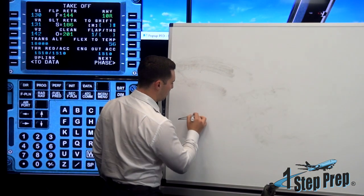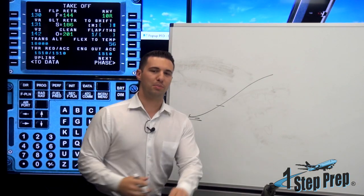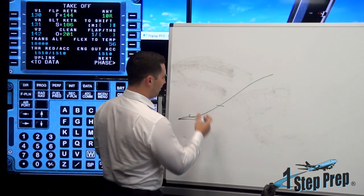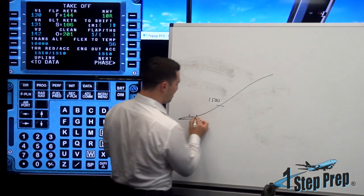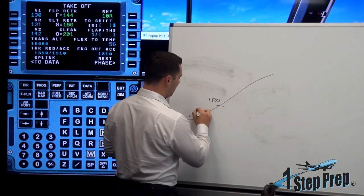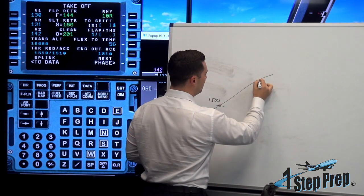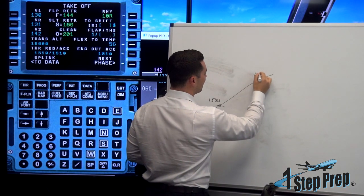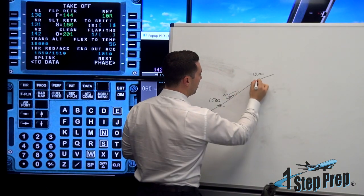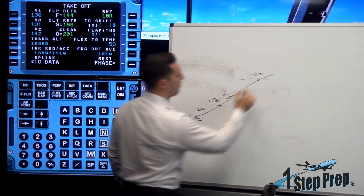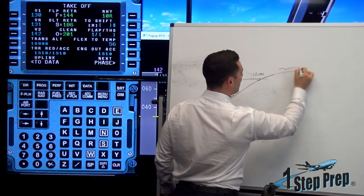Let's first look at a normal takeoff scenario. When we do a normal takeoff, the thrust reduction altitude in Airbus typically defaults to 1,500 feet above ground level. So from getting airborne up to 1,500 feet, we are below thrust reduction altitude. Then from 1,500 up to 10,000 feet, we're above thrust reduction altitude but below 10,000 feet. And then above 10,000 feet and above thrust reduction altitude, we have a third option.